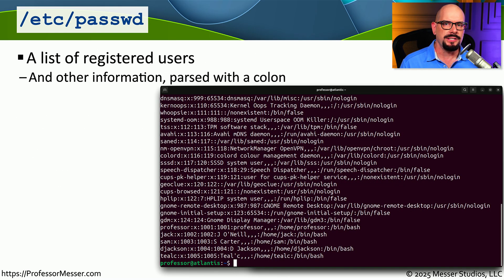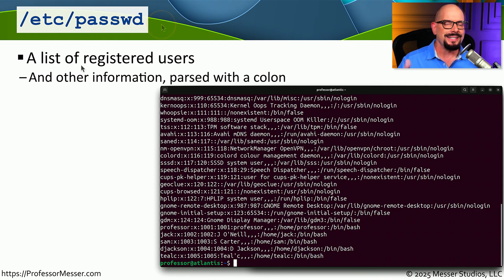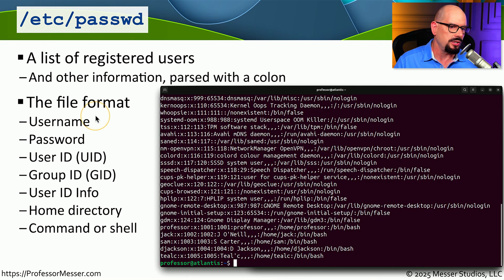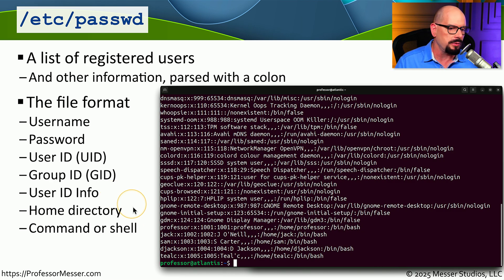When you add a user to a Linux system, important parameters are stored in a file in the /etc directory called passwd. This file lists all users on the system along with configuration parameters such as username, password information, user ID, group ID, user ID information, home directory, and the command or shell to run as that user.